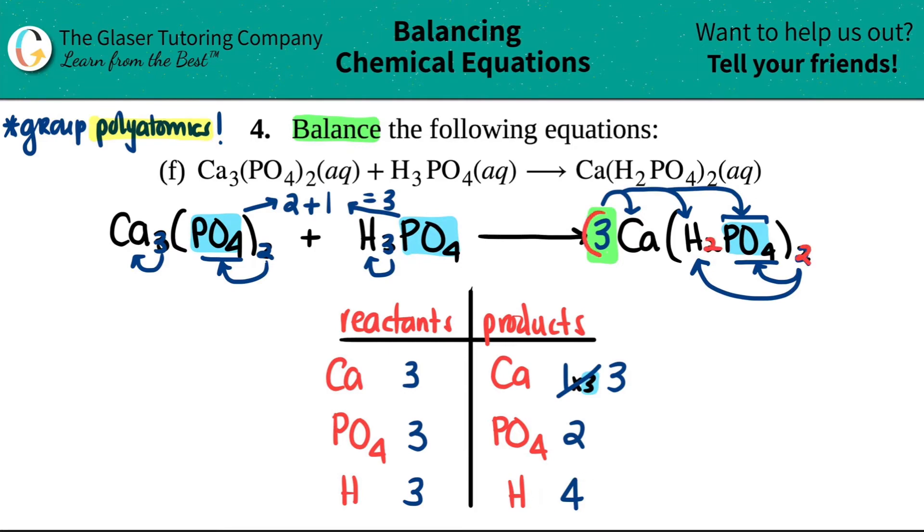All the numbers are going to change here. Remember I had four hydrogen—two times two. But now I have to times it by three, so two times two is four, four times three is now twelve. And then you do the same thing—you had two phosphates, but now two times three is six.